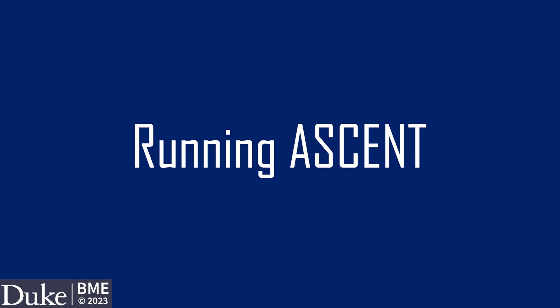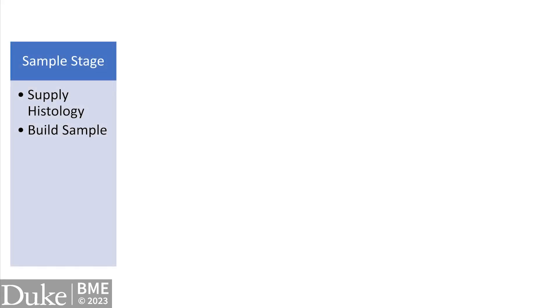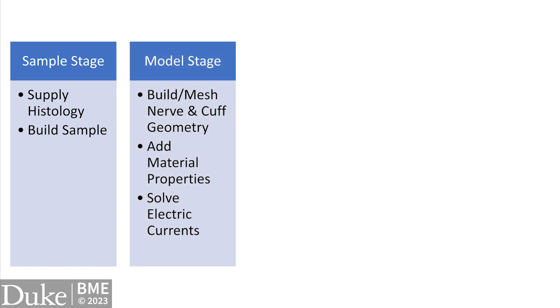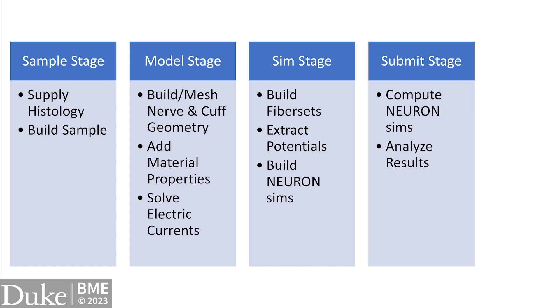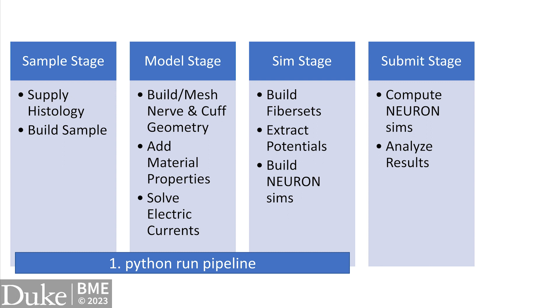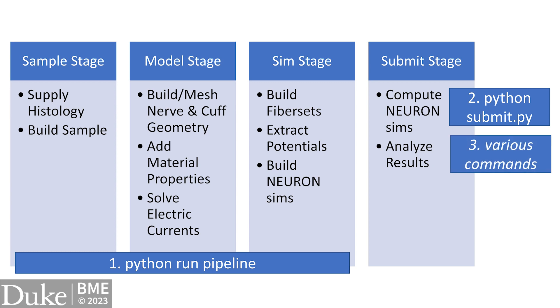Now that the ASCENT software is fully installed, we're ready to go through an example run of the pipeline. ASCENT has four stages: the sample stage defines how your input nerve morphology is processed; the model stage builds and solves the finite element model; the sim stage prepares the biophysical simulations of individual nerve fibers; and finally in the submit stage, the simulations prepared in the sim stage are computed, and then we can analyze our results. We'll run the pipeline in three steps: a run command which executes the first three stages, a submit command to execute stage 4, and finally plotting the resulting data using one of many provided analysis scripts to generate a heat map of activation thresholds.